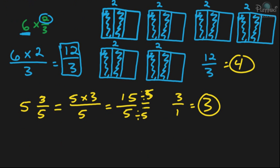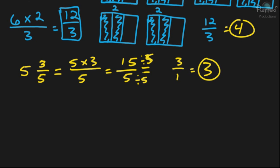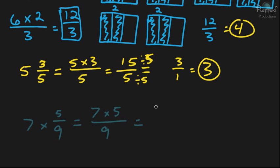Let's look at one more example — this is going to be a fairly short lesson. Let's say we have seven times five-ninths. We take the whole number and multiply it by the numerator, so seven times five, and then we put that over the denominator. So seven times five is thirty-five over nine. That's all we have to do to multiply a whole number and a fraction, and then you can simplify your answer. So thirty-five over nine — you can do thirty-five divided by nine.